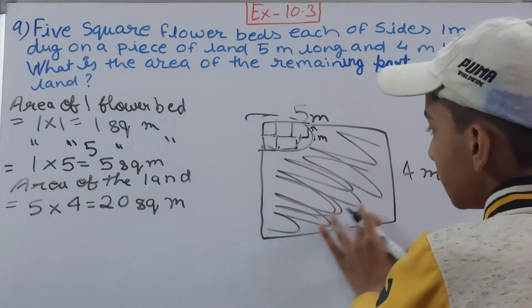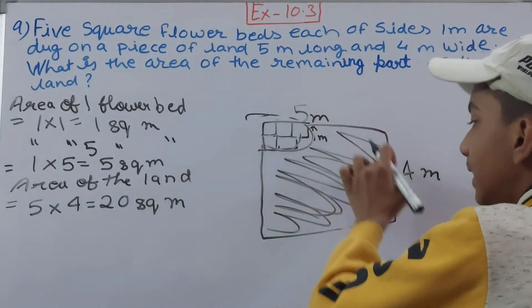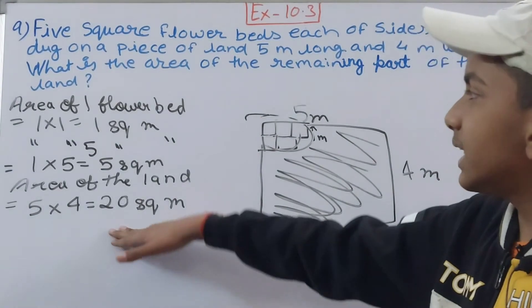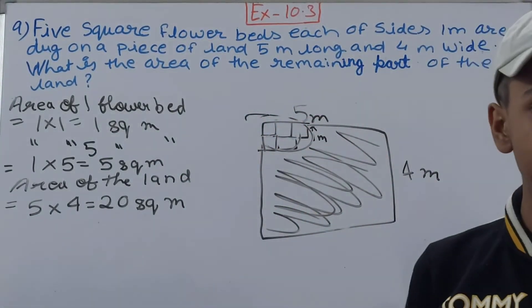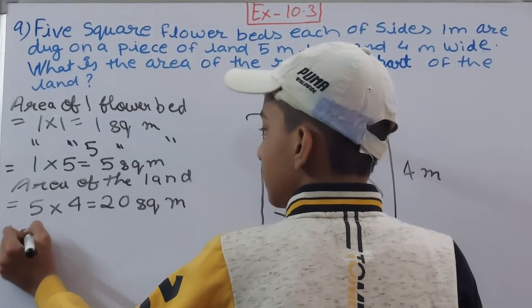The whole area combined of the flower beds and the left area is 20 square meters. Now you will remove from this the area of these flower beds, and you will get the remaining area which is left.